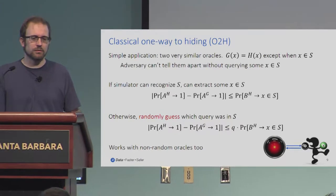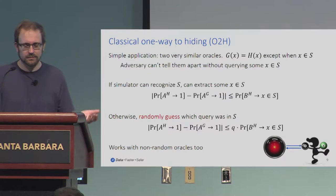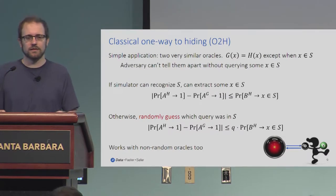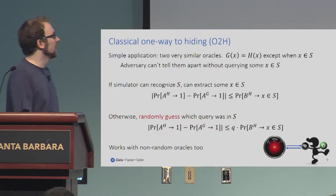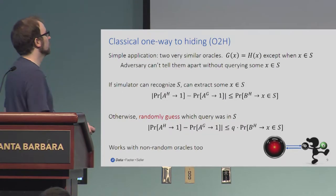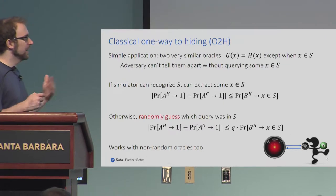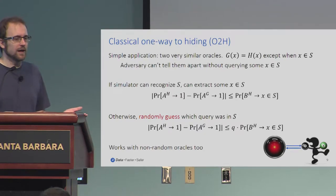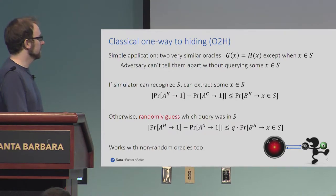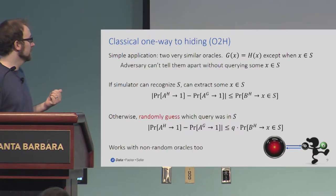Of course, it's also possible that the simulator is not able to recognize elements of S, like if it's a CDH problem. In that case, at worst it can randomly choose one of the queries and guess that that was the element of S. Then if the adversary is telling things apart with some probability, that's less than the number of queries times the probability that the simulator is extracting things. While this talk is nominally about the random oracle model, this is going to work with things that are not necessarily random oracles — they can be oracles drawn from any arbitrary distribution or fixed oracles.